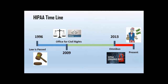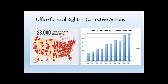To summarize the HIPAA timeline: 1996 the law was passed with no real enforcement; 2009 brought real enforcement through the Office of Civil Rights, state attorneys generals, and the HITECH Act; and 2013 strengthened enforcement again. Since then, reported HIPAA violations have been steadily moving up and to the right.